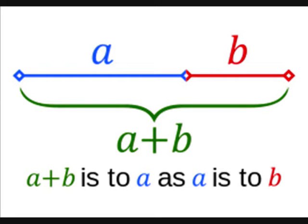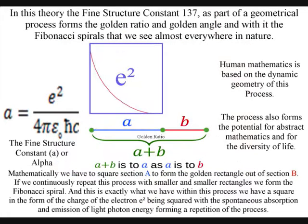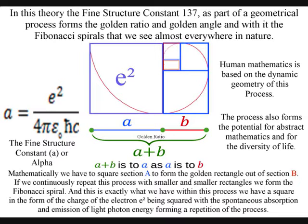If we look at the golden ratio, we find it is divided into two parts, a and b. We have to square section a to form the golden rectangle out of section b. If we continue doing this, we form the Fibonacci spiral.